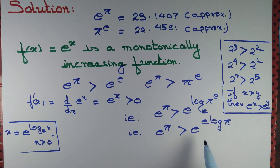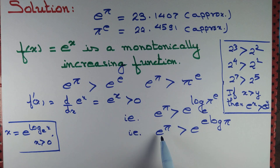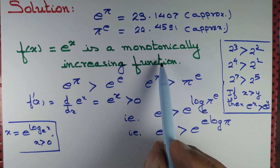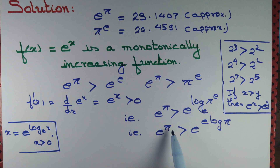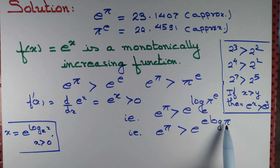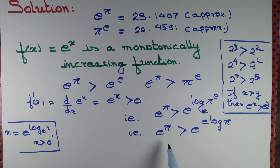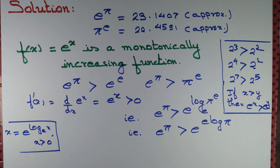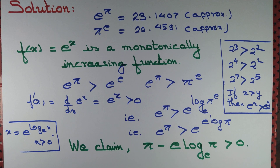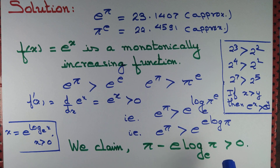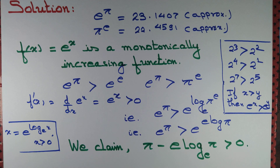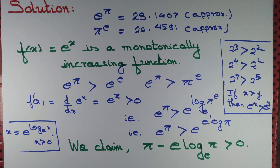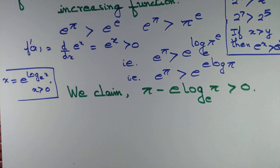Since e to the power x is a monotonically increasing function, it suffices to show that pi is greater than e times log pi. In other words, we need to prove that pi minus e times log pi is greater than zero.